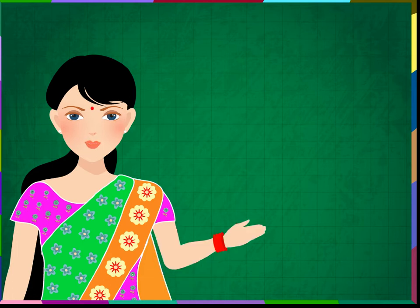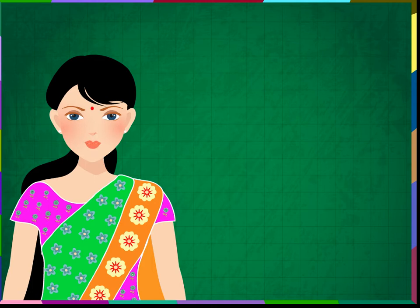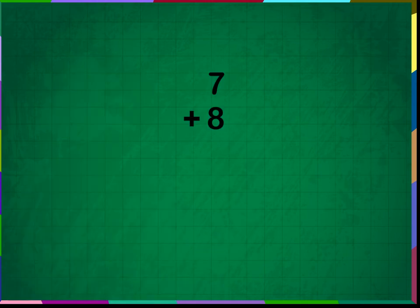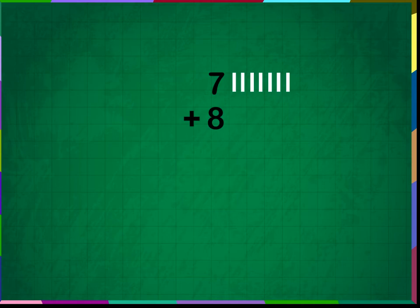We know that we can do addition vertically. We learnt vertical addition in the previous lesson too. We also know that vertical addition will be used for bigger numbers. Add 7 plus 8. Let us place the numbers vertically one below the other.